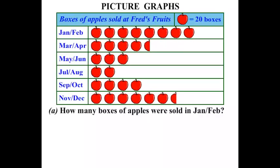In Part A, how many boxes of apples were sold in January-February? Well, in January-February, looking at our key, each apple is worth 20 boxes. So counting: 20, 40, 60, 80, 100, 120, 140, 160. So we've got 160 boxes there in the Jan-Feb period.